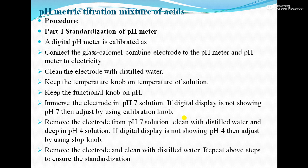If the meter shows pH 7 it is fine; otherwise, use the calibration knob to set it. Then remove the electrode, clean with distilled water, and immerse it in pH 4 solution. If the display does not show pH 4, adjust using the slope knob. For pH 7 use the calibration knob; for pH 4 use the slope knob. Finally, remove the electrode, clean with distilled water, and repeat the above steps to ensure standardization.